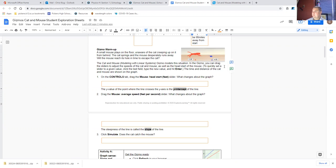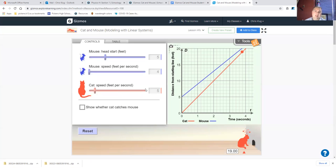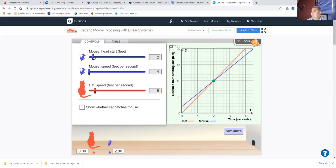In the gizmo, you can drag the sliders to adjust the speeds of the cat and mouse, as well as the head start of the mouse. To quickly set a slider to a given value, remember you can click on the text field, enter the value, and then hit enter. The time and distance of the cat and mouse are shown on the graph. On the controls tab, drag the mouse head start feet slider. What changes about the graph?